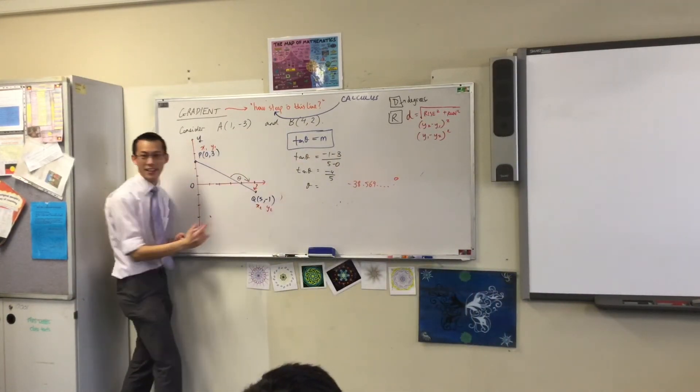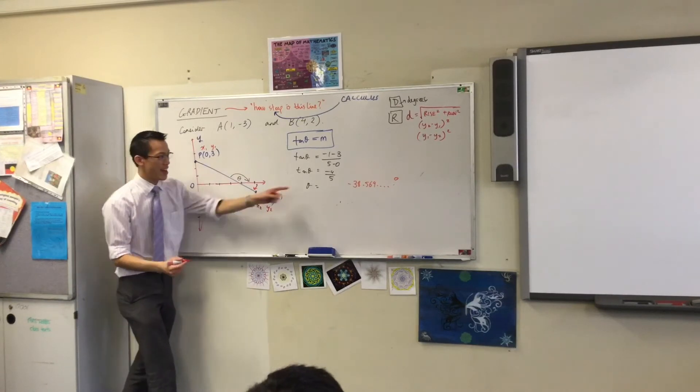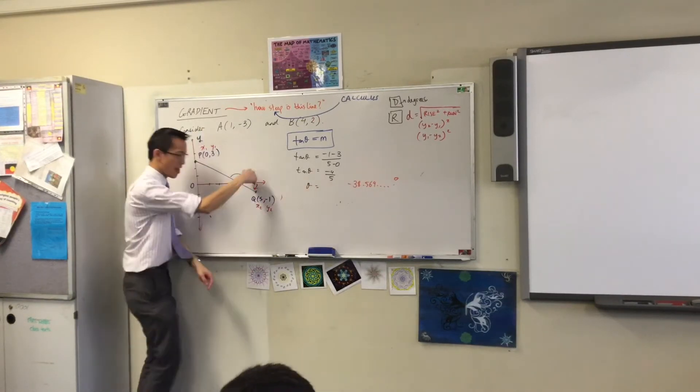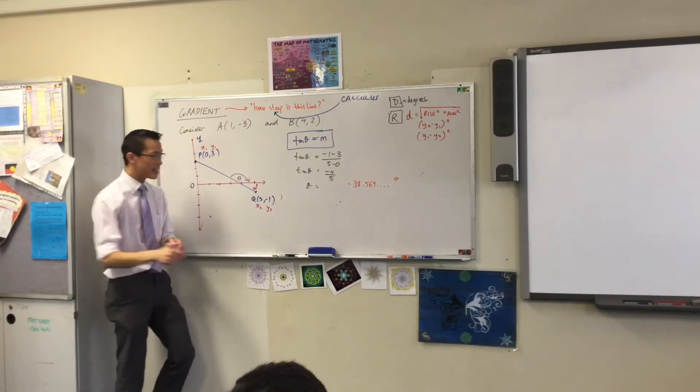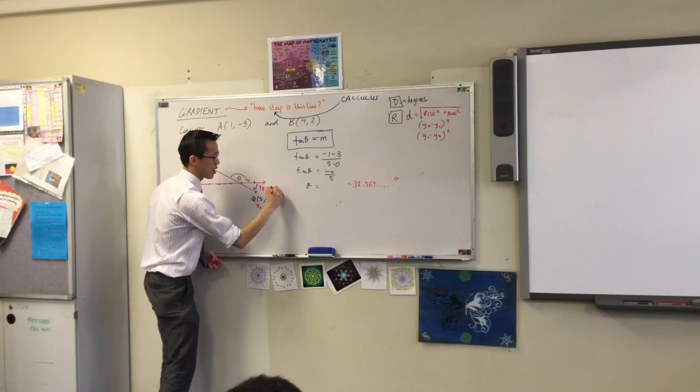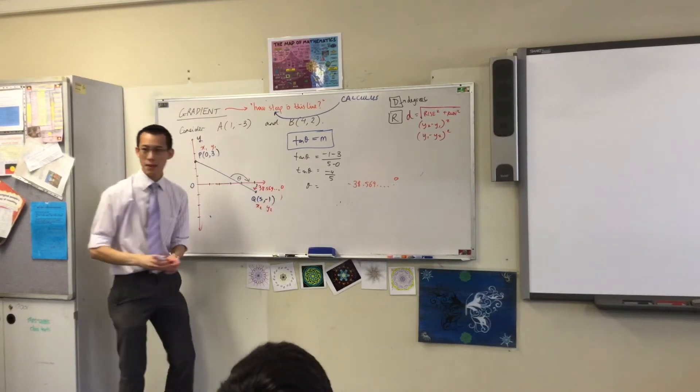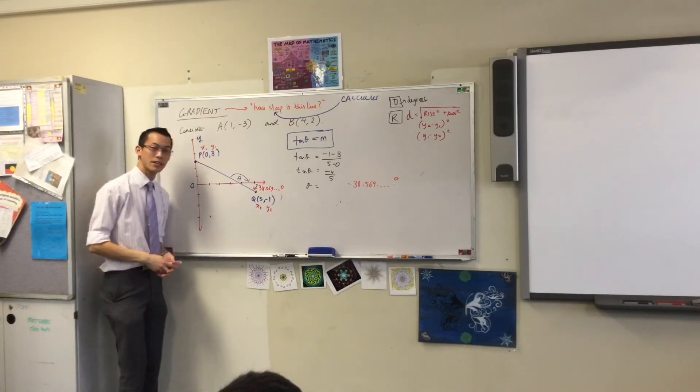It's negative because it's not in the right spot. Look, it's going down underneath the axis, right? It's 38.569 that way, not that way, okay? So I need this angle, 38.569 dot dot dot, okay?